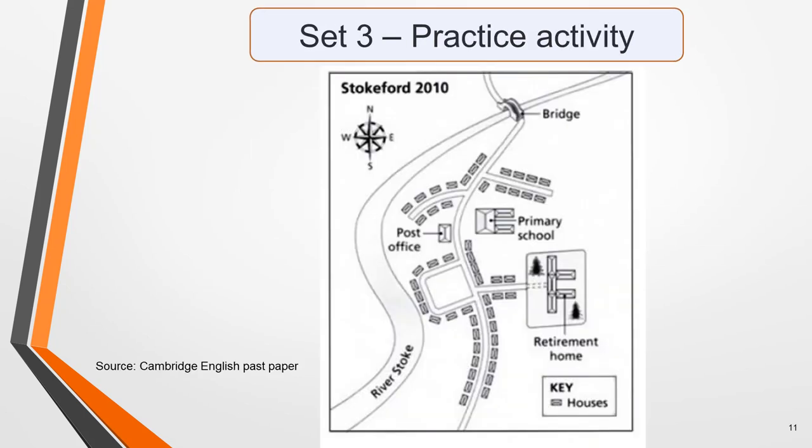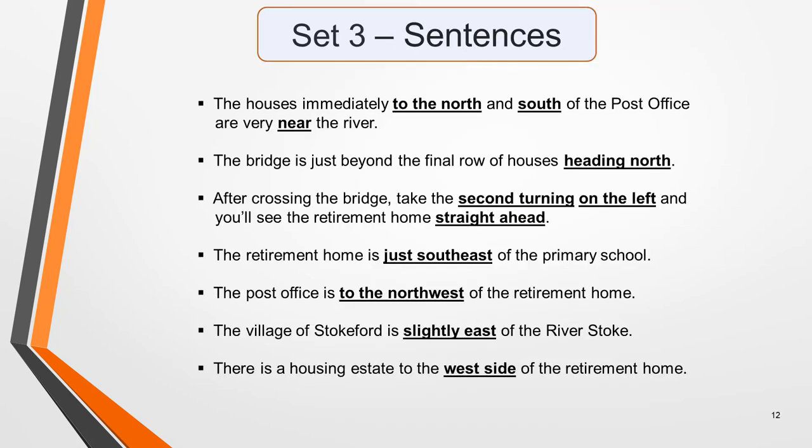Now listen to these sentences. The houses immediately to the north and south of the post office are very near the river. The bridge is just beyond the final row of houses heading north. After crossing the bridge, take the second turning on the left and you'll see the retirement home straight ahead. The retirement home is just south-east of the primary school. The post office is to the north-west of the retirement home. The village of Stokeford is slightly east of the river Stoke. There's a housing estate to the west side of the retirement home. Pause the video if you want to study them.